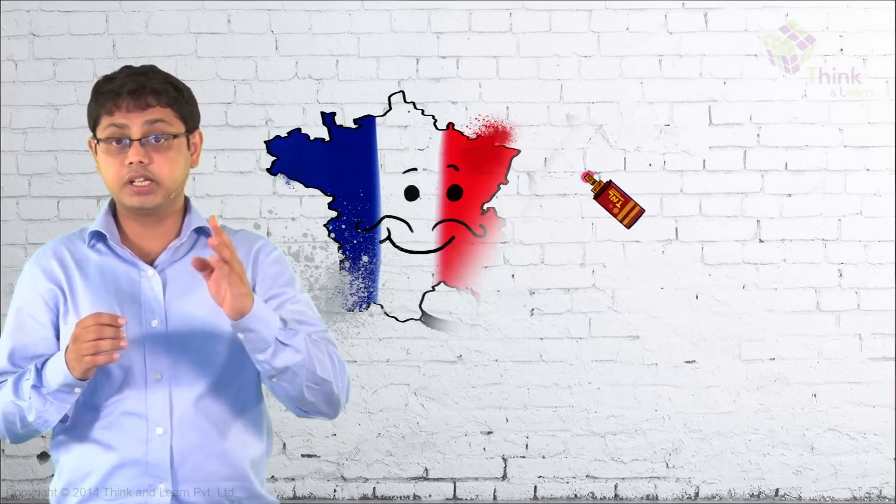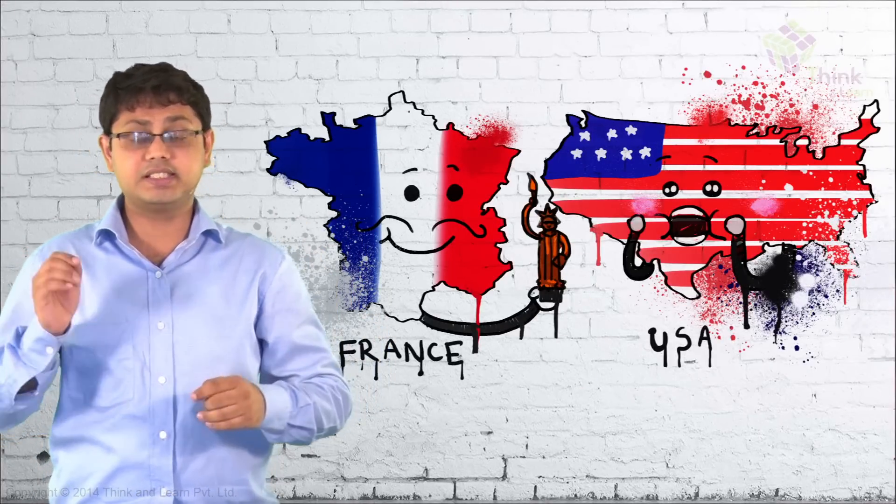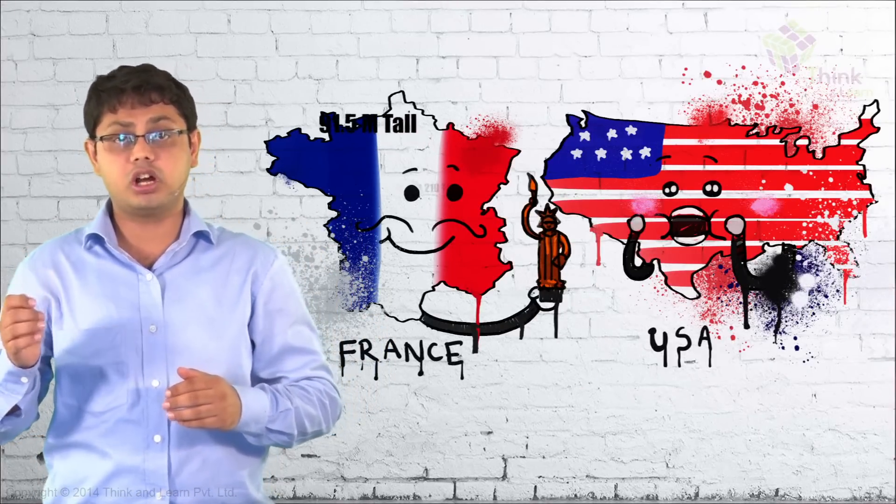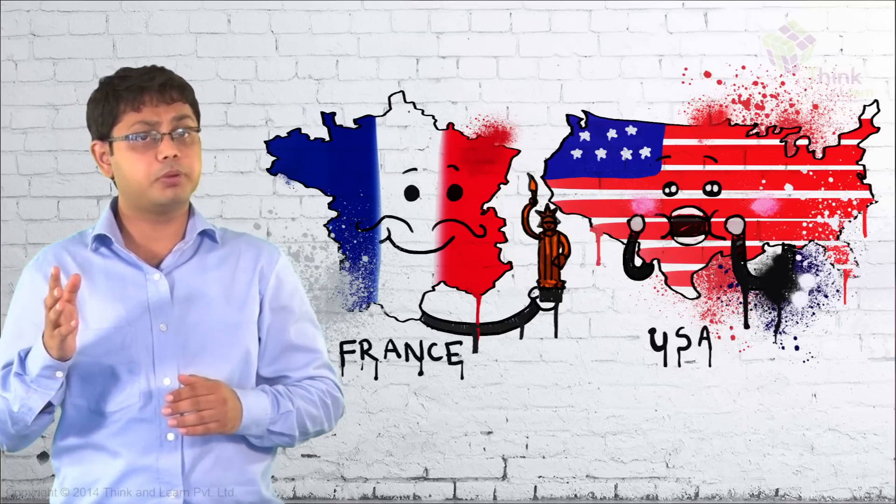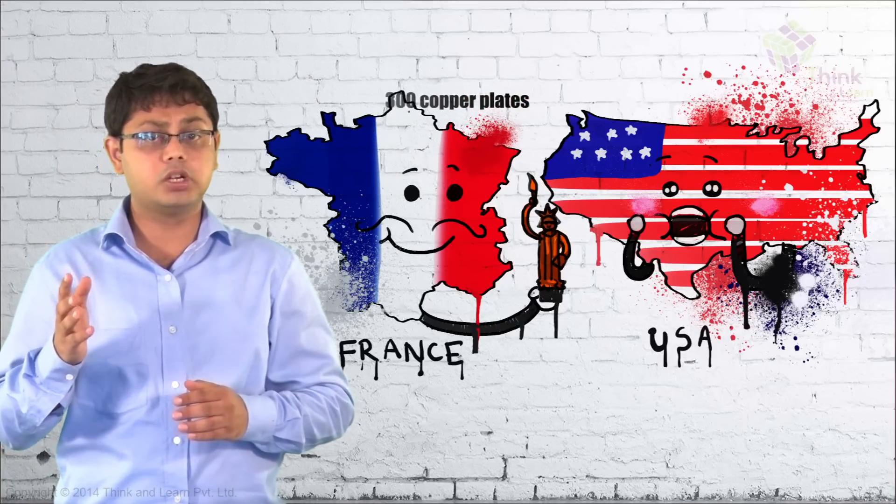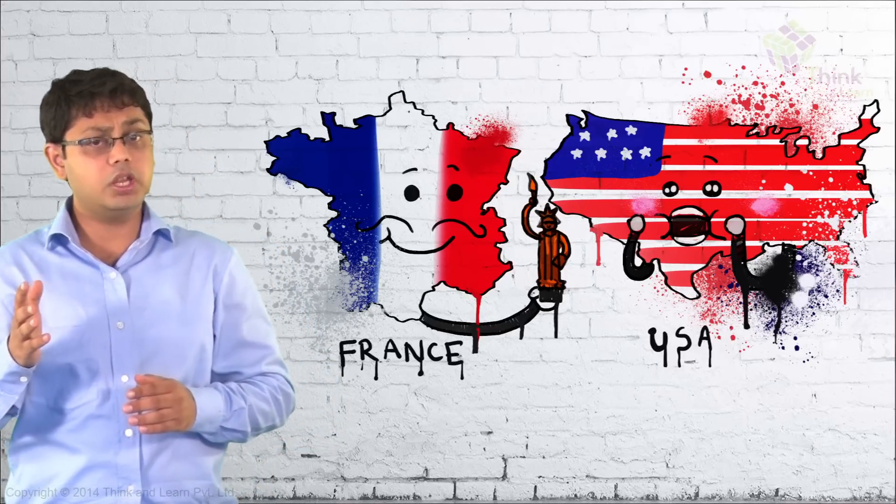The world-famous Statue of Liberty? It was a gift from France to the United States of America. It stands 91.5 meters tall and weighs 210 tons. The outer layer of the statue is made up of around 300 overlapping copper plates. So, initially, when it was gifted,